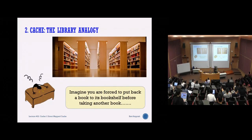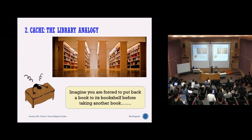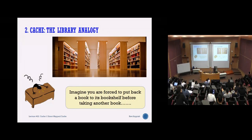This is where the whole idea of cache comes in — how can we improve overall access to memory. Using a library analogy: imagine you are forced to put back a book on the shelf before taking another book. Every time you go in, you take one book, read it, must put it back, then take another. That is very slow — every time you can only take one book at a time.